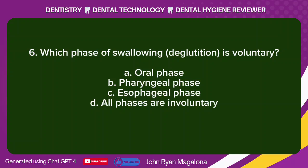Question 6: Which phase of swallowing (deglutition) is voluntary? A. Oral phase. B. Pharyngeal phase. C. Esophageal phase. D. All phases are involuntary. Answer: A. Oral phase.